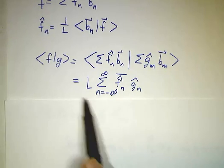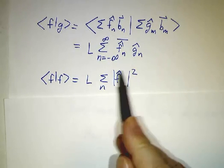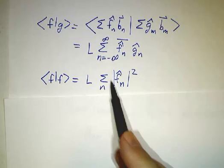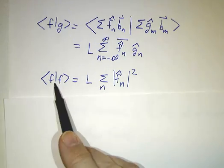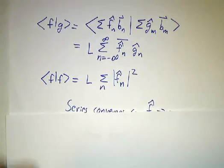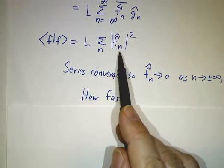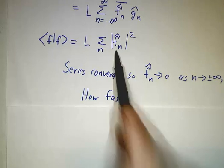A very special case is when you take the inner product of f with itself, because then you get the nth Fourier coefficient of f squared. So the Fourier coefficients give you something that's square-summable as long as f is square-integrable. If this sum converges, the f-hats have got to decay as n goes to infinity or as n goes to minus infinity. The question is how fast?